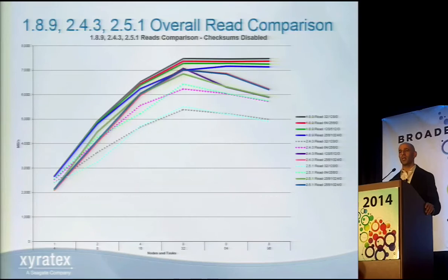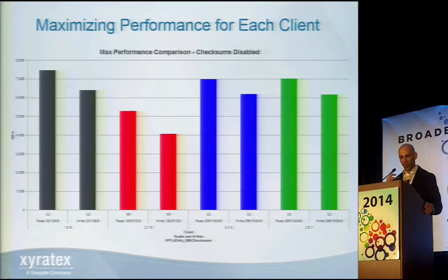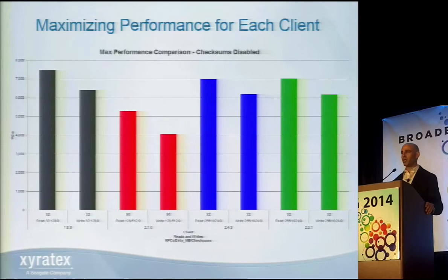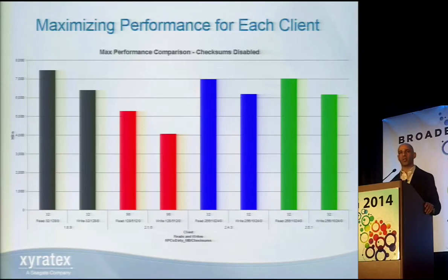The overall takeaway is that with the right client tuning parameters, 2.4.3 and 2.5.1 can sustain the rated storage performance of 6 gigabytes per second. With 1.8.9, the biggest impact was the number of threads, regardless of tuning parameters. For the direct comparison to maximize performance, 1.8.9 performed best with 32 max RPCs in flight and 128 max dirty MBs. 2.1.6 was the lowest performing result. 2.4.3 and 2.5.1 with 256 max RPCs in flight performed within range of 1.8.9 — very encouraging progress from 2.1.6.